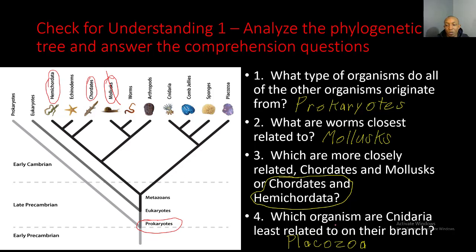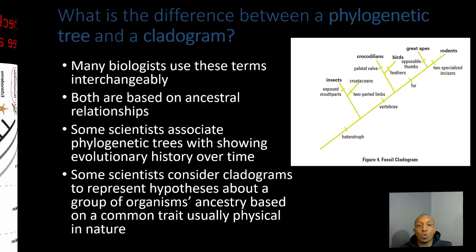Number four: which organism are cnidaria least related to on their branch? Cnidaria have a close relationship with comb jellies because they come off the same branch, and they also share a branch with sponges. However, they do not come off the same branch as placozoa, so cnidaria are going to be least related to placozoa.